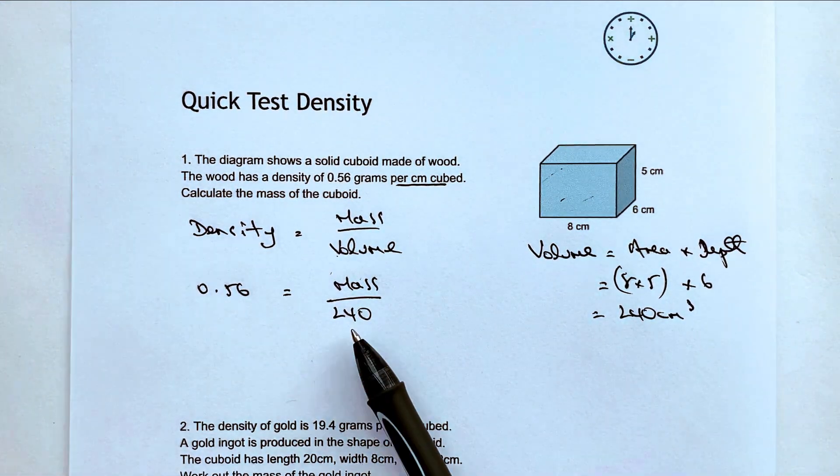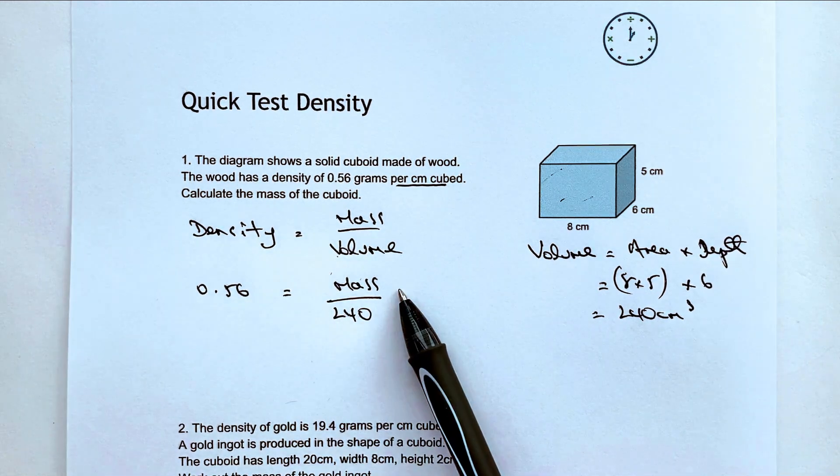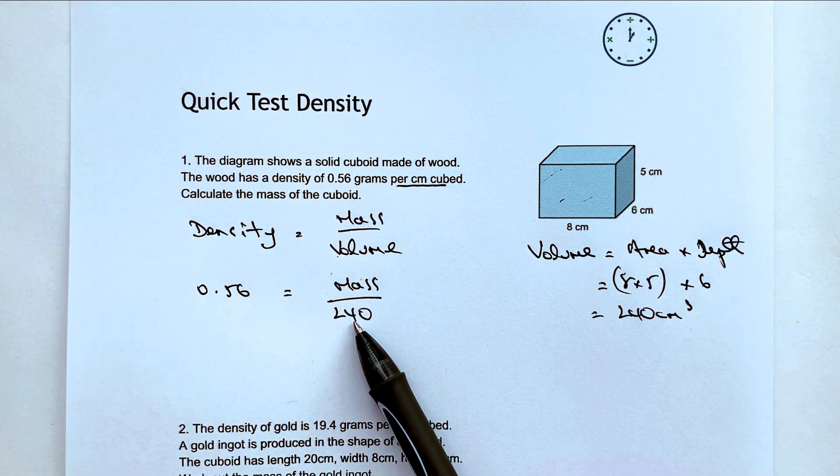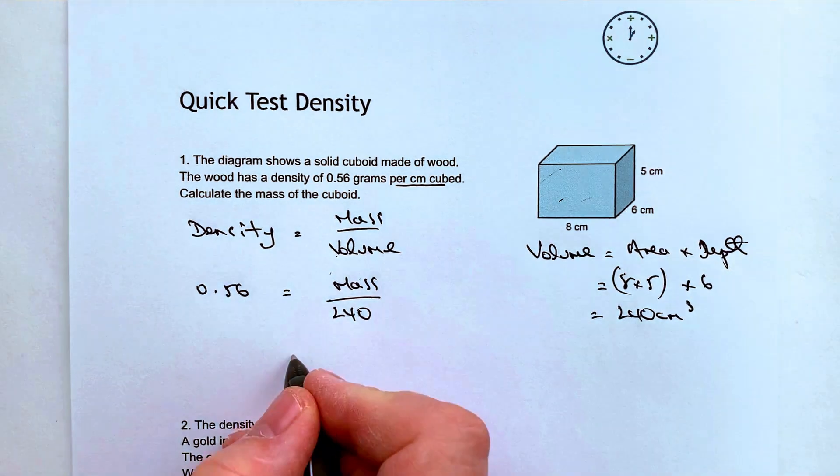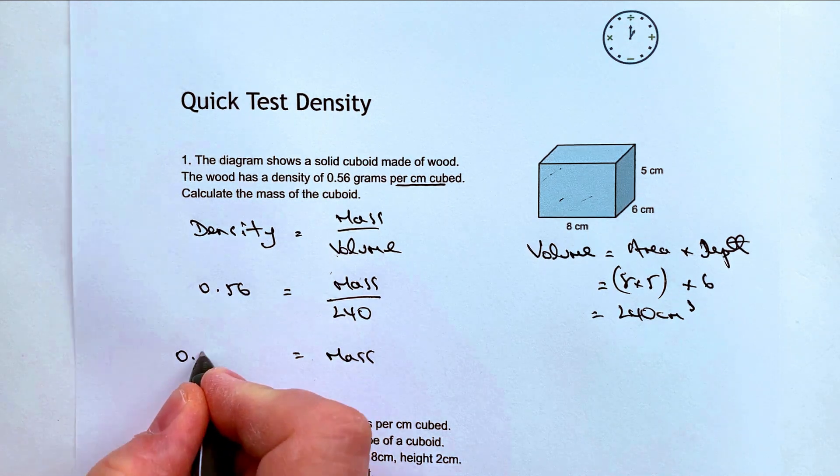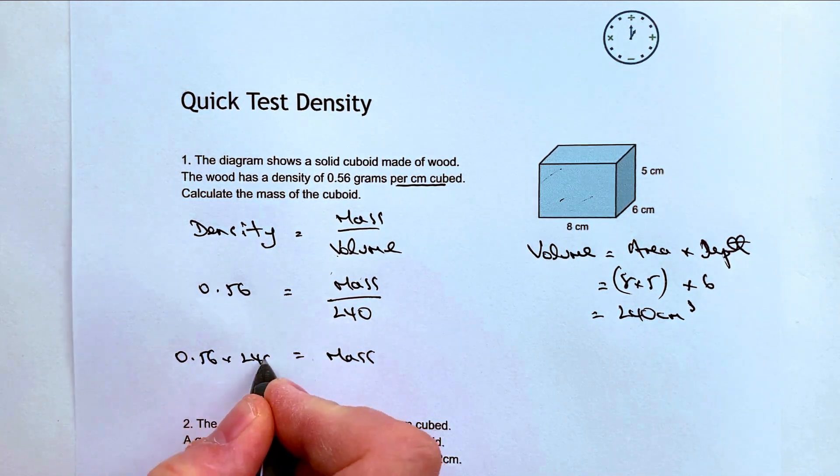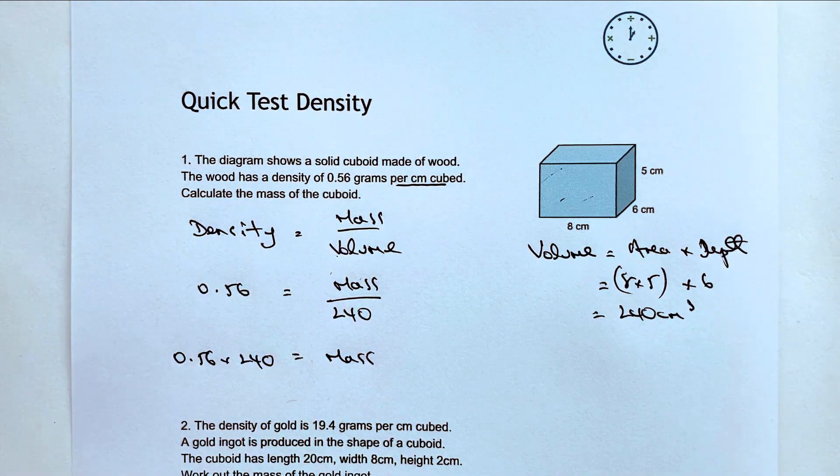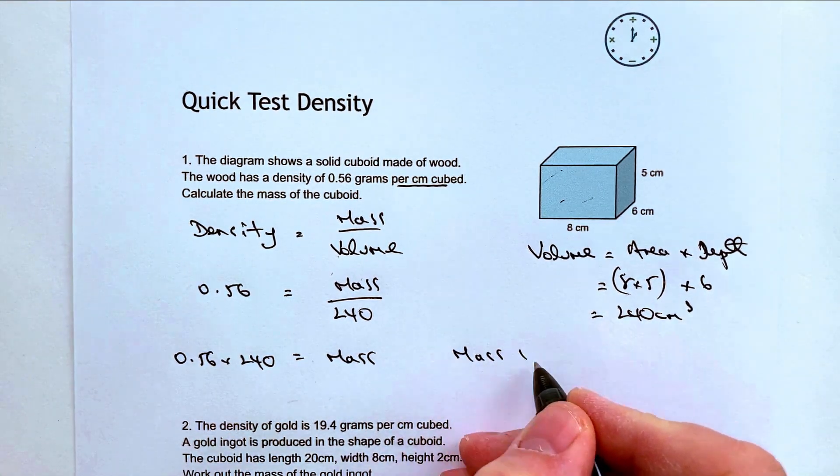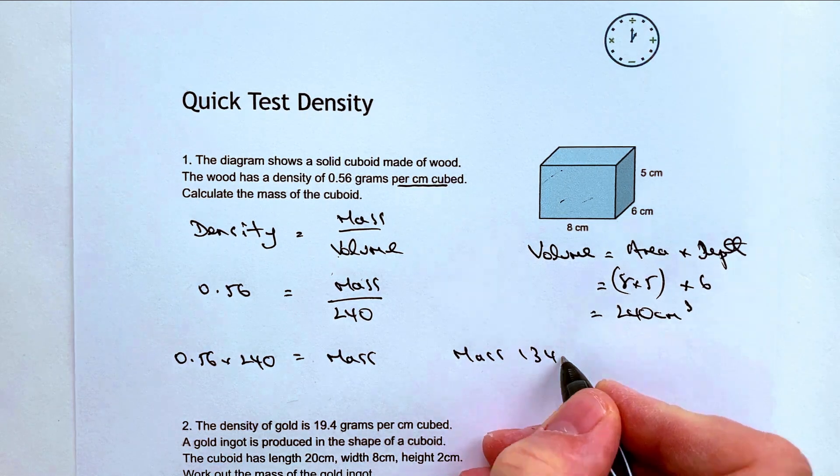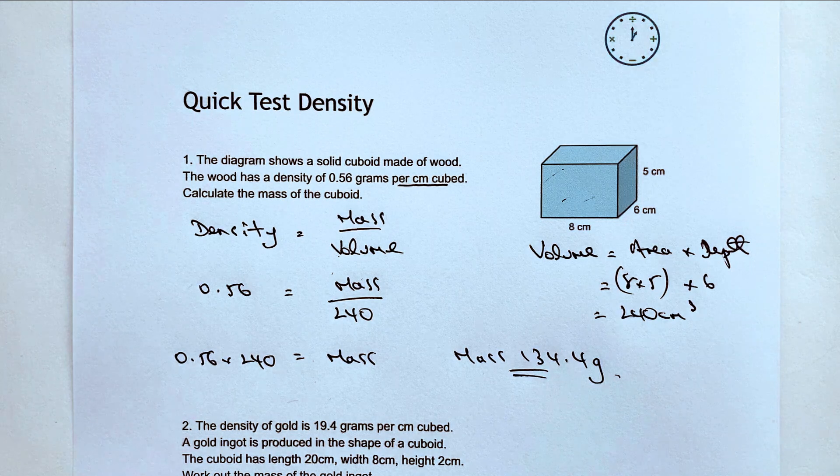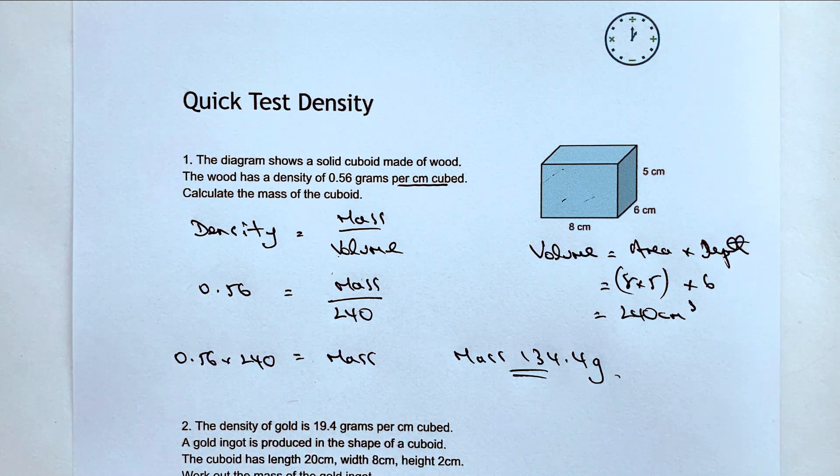Now all I'm going to do is I'm going to multiply both sides of the equation by 240, which means I lose this denominator and I'm going to get the mass equals 0.56 times 240. Pop that in a calculator and I'm going to get a mass of 134.4 grams, and that would be the answer to this particular question.